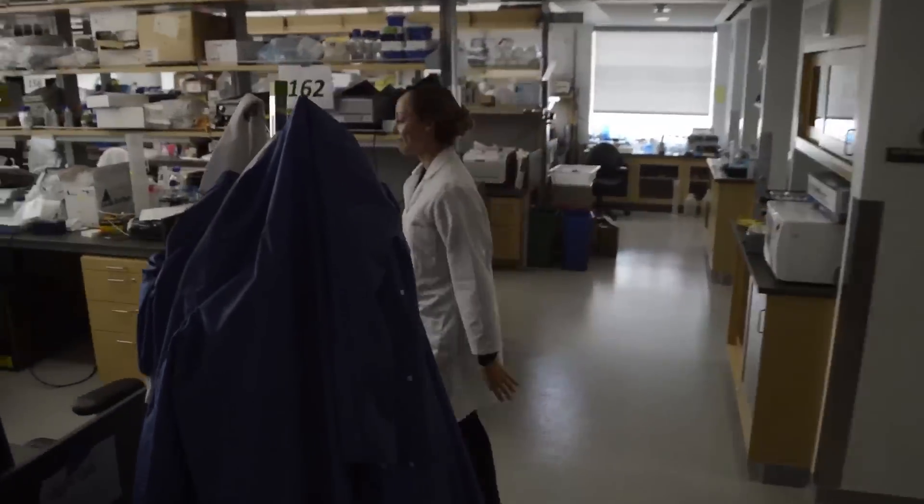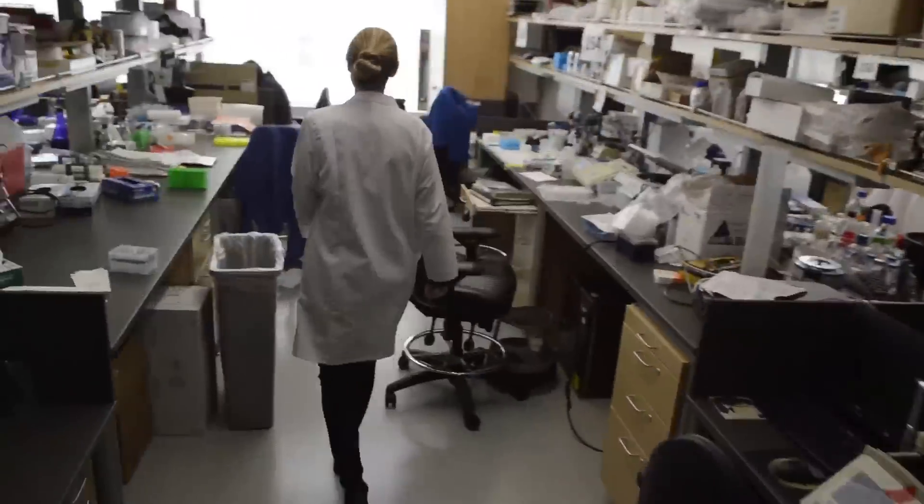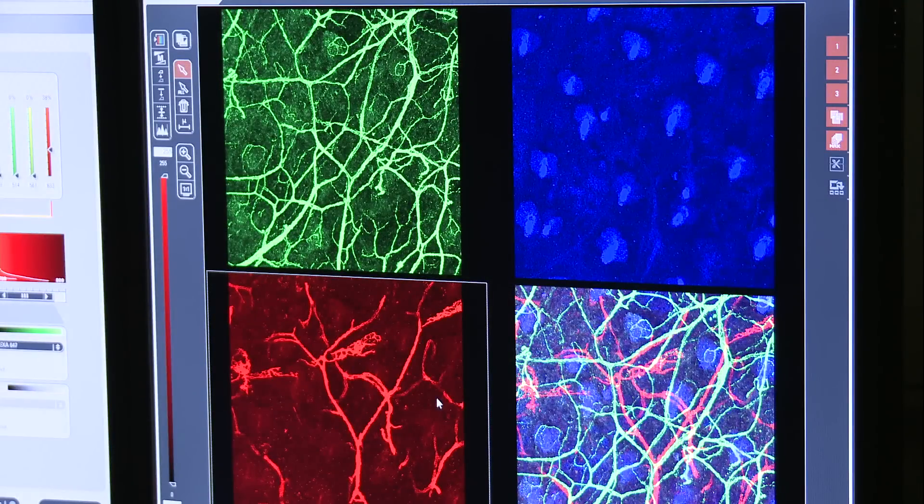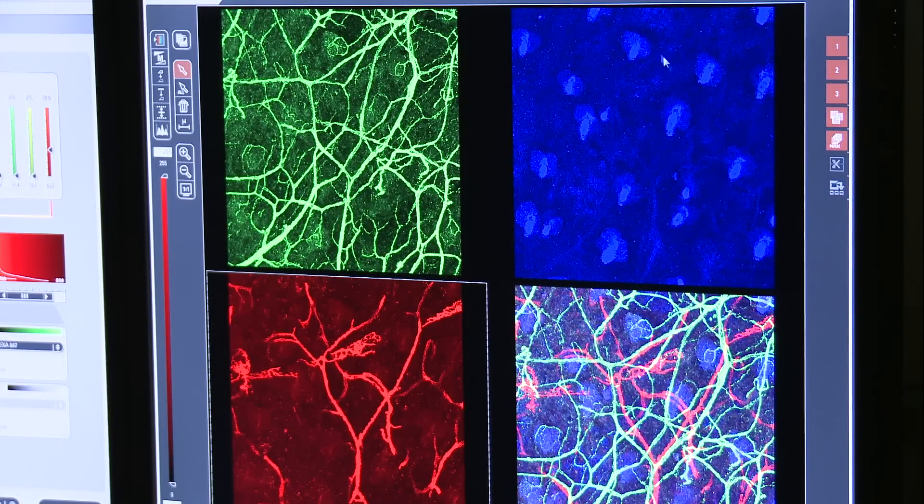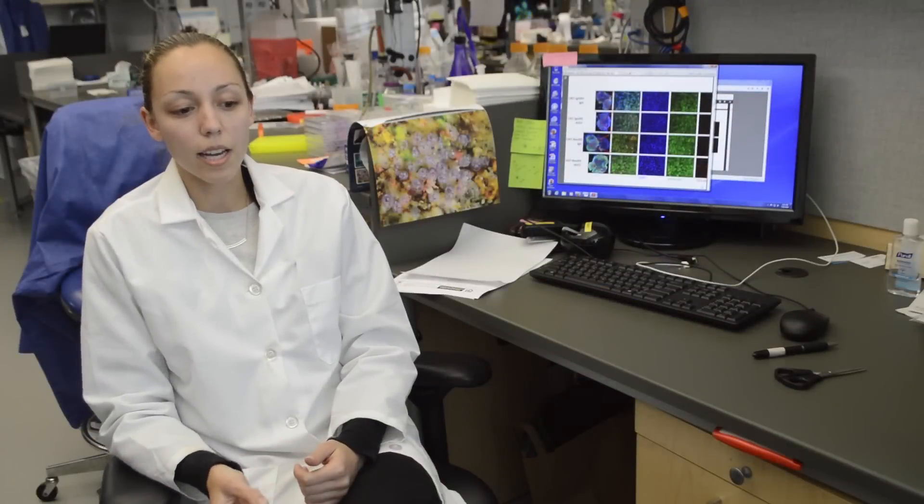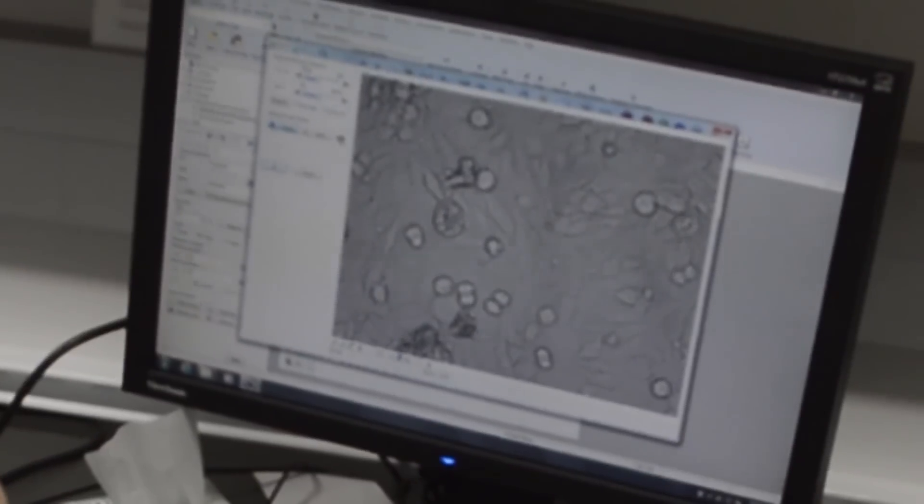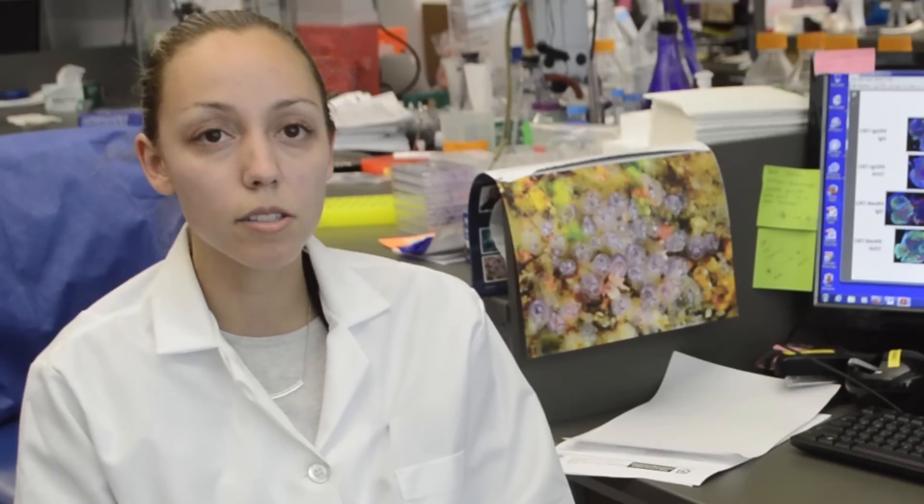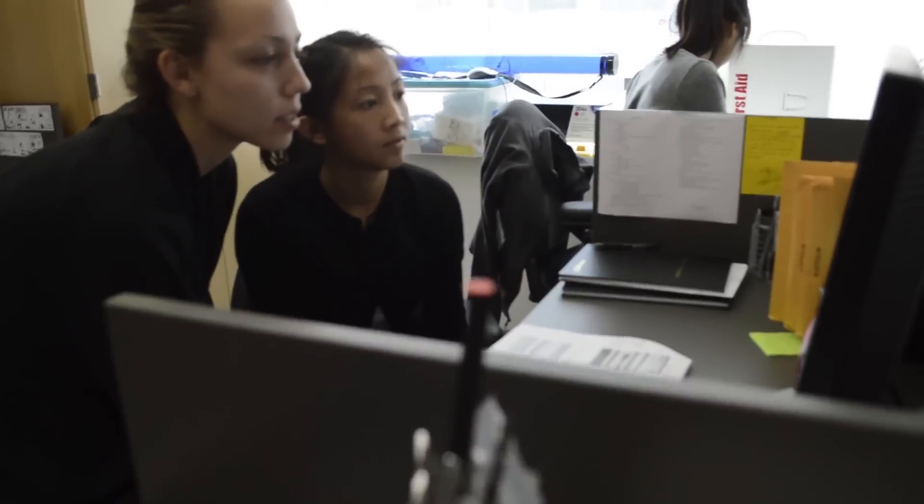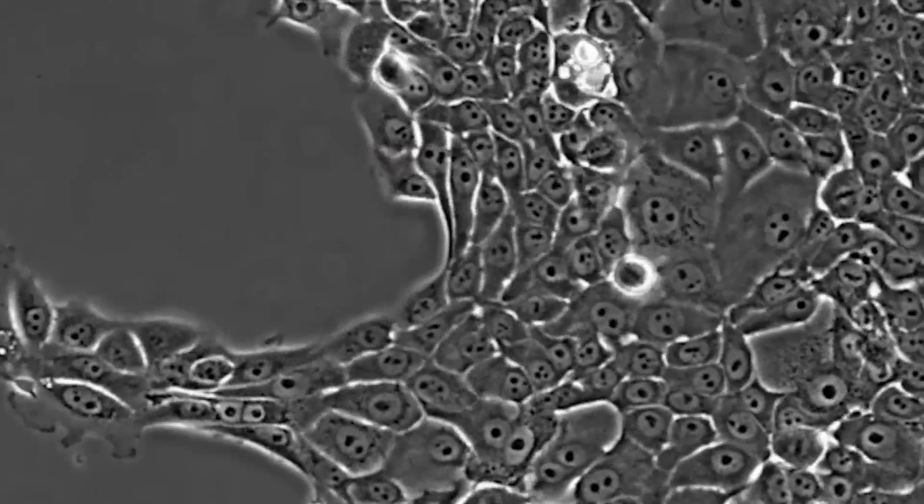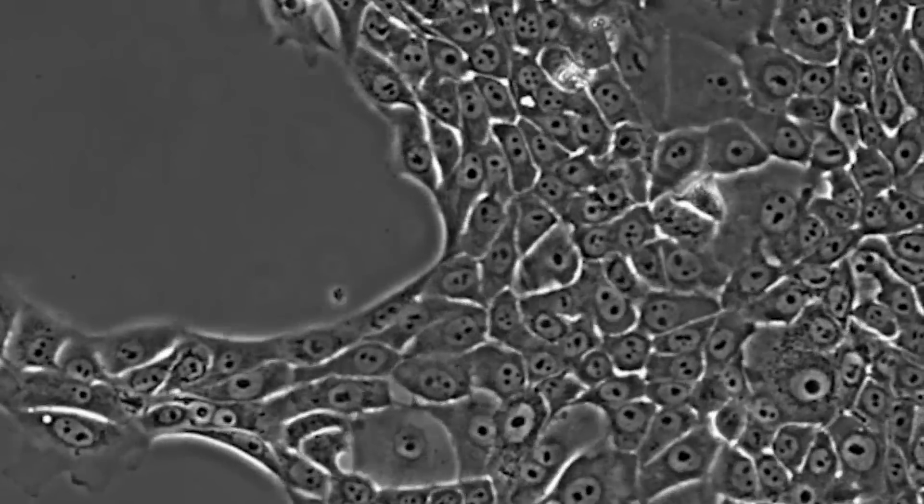We look at the tumor microenvironment, the area around the tumor cells themselves, and how that may impact the development of resistance to the chemotherapeutic agent. I specifically look at microglia cells which are a type of immune cell. The theory is that these cells may not be attacking the tumor, that they may be helping the tumor become more invasive because we found higher levels of microglia in the resistant tumors.